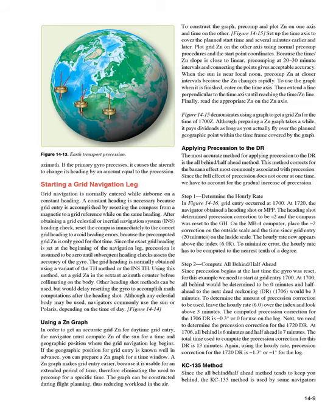Although any celestial body may be used, navigators commonly use the sun or Polaris, depending on the time of day. Figure 14-14. Using a ZN graph: in order to get an accurate grid ZN for daytime grid entry, the navigator must compute ZN of the sun for the time and geographic position where the grid navigation leg begins. If the geographic position for grid entry is known well in advance, you can prepare a ZN graph for a time window. A ZN graph makes grid entry easier because it is usable for an extended period of time, therefore eliminating the need to precomp for a specific time. The graph can be constructed during flight planning, thus reducing workload in the air.